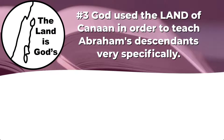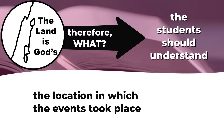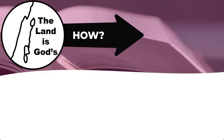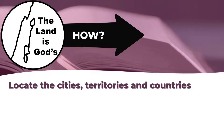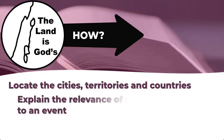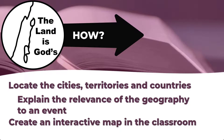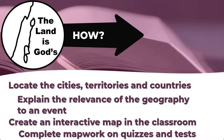Number three, God used the land of Canaan in order to teach Abraham's descendants. Therefore, my students should understand the location in which the events took place. Can they locate the cities, territories, and countries relevant to that time? Can they explain the relevance of the geography to an event? I could have the classroom set up like an interactive map of the Holy Land, where points in the room represent key areas and cities. On my quizzes and tests, I would definitely want to include a map for recall of key locations. A matching game or quiz would also be an effective way to reinforce what events happened at key locations.